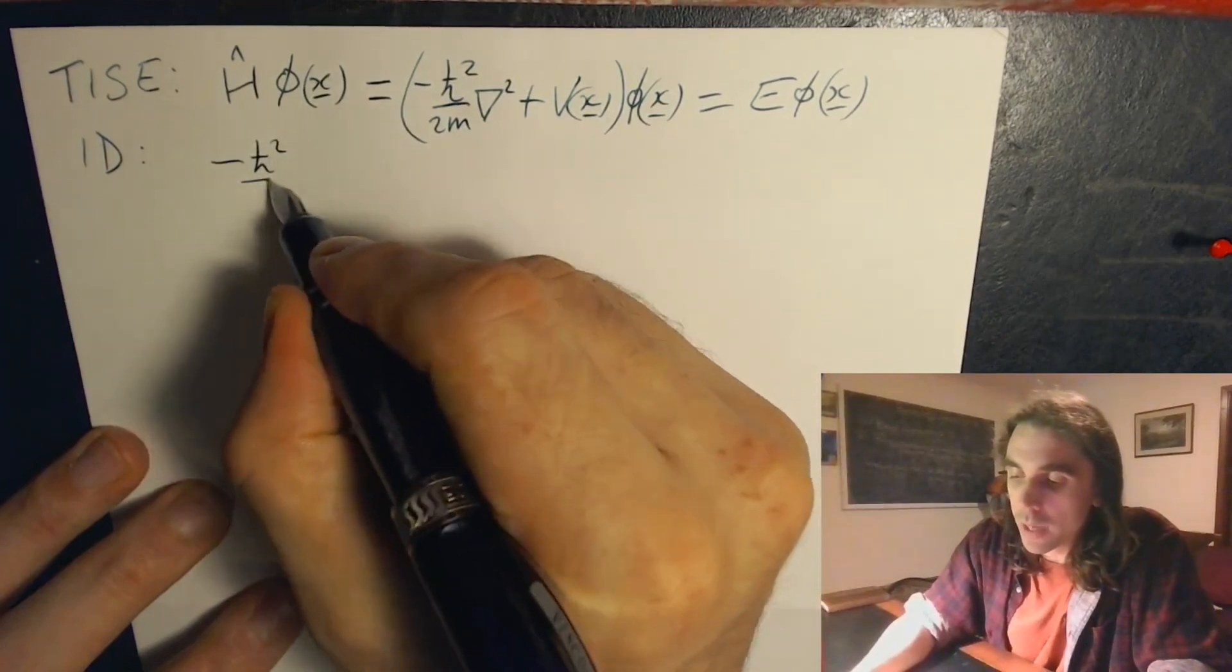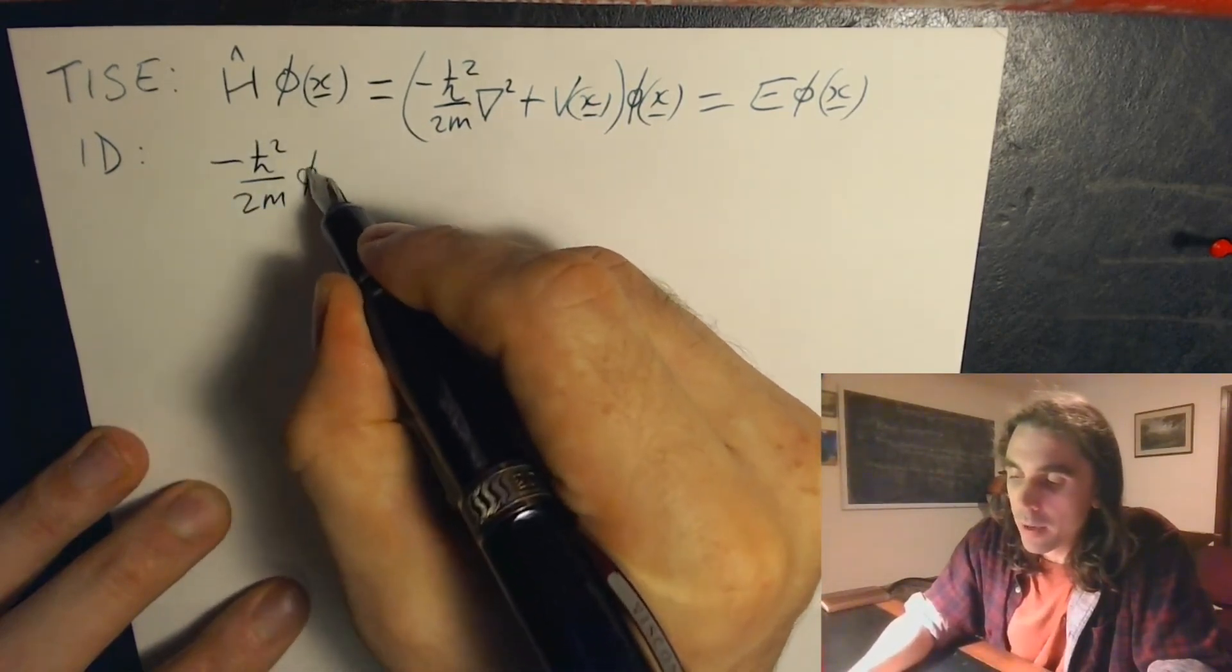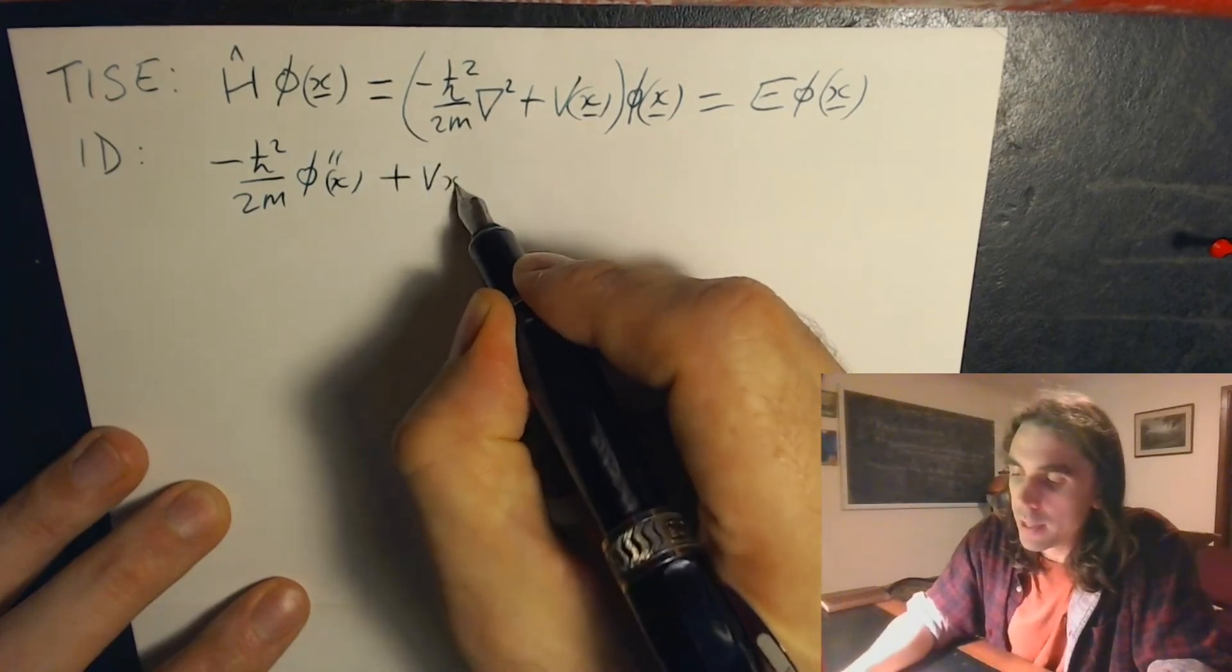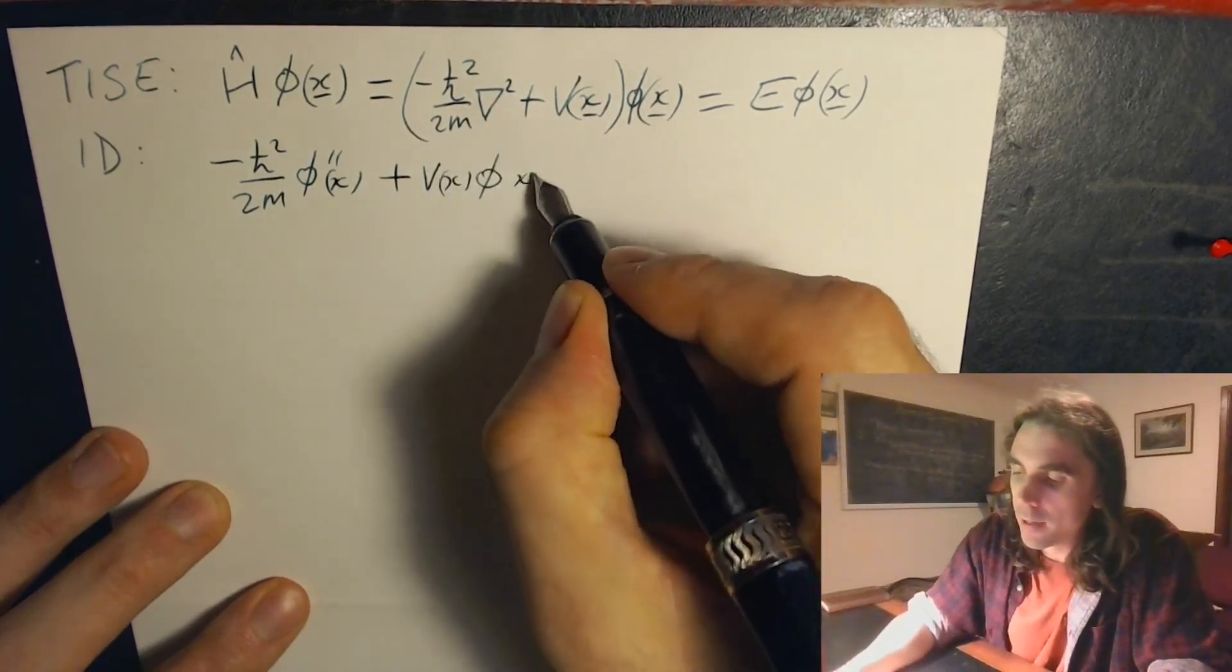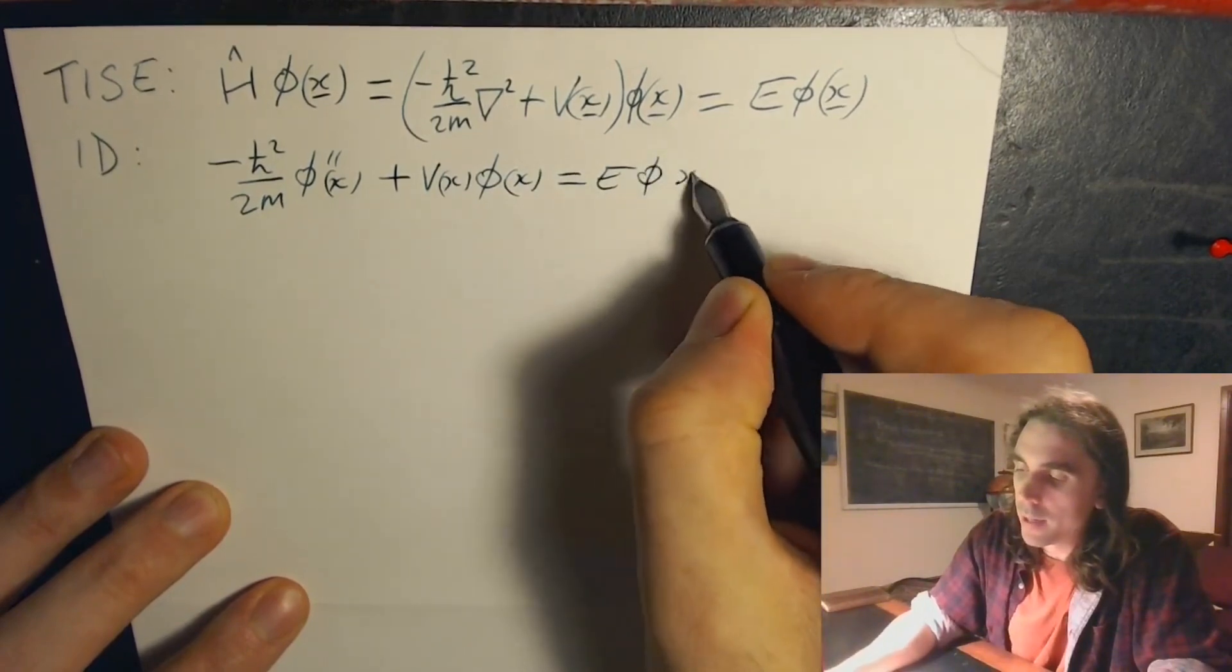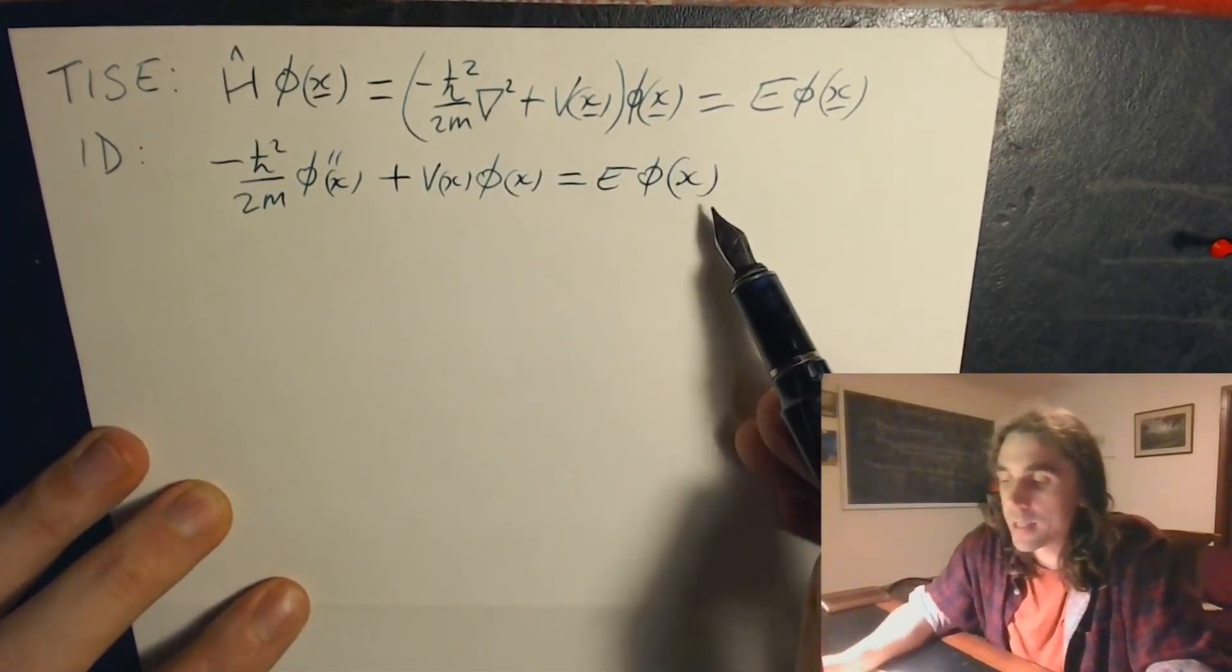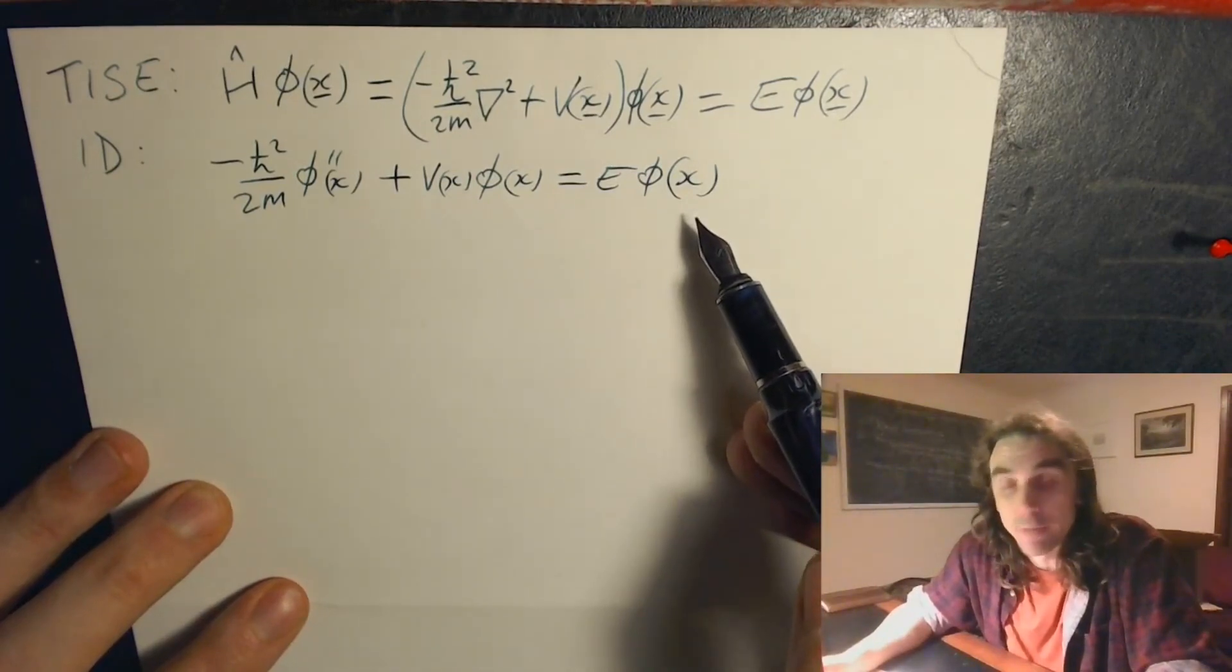As minus h bar squared over 2m phi double prime of x plus v x phi of x equals e phi of x. So in this case it's just a second-order ordinary differential equation.